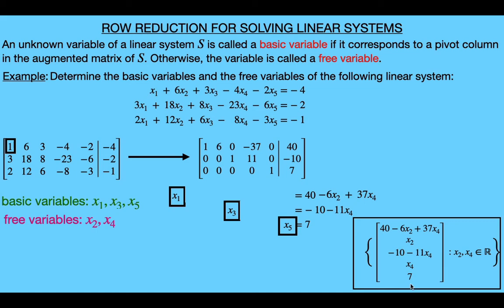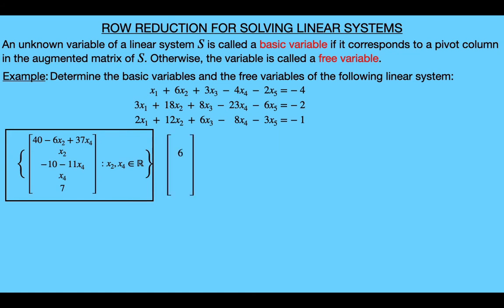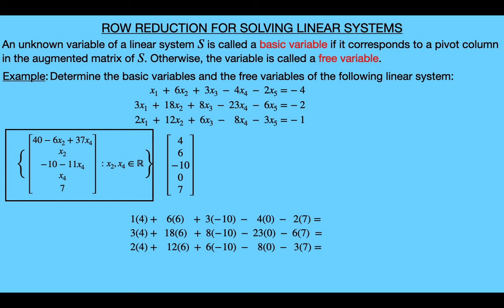And so hopefully here you can see why we call them free variables — because when we describe the solution set like this, we're free to choose any value for these two free variables x sub 2 and x sub 4. For example, suppose that we chose 6 to be the value for the x sub 2 parameter and 0 to be the value for the x sub 4 parameter. Then the values for the other entries will be determined by these two choices. So the first entry will be 40 minus 6 times 6, which is equal to 4; the value for the third entry will be negative 10 minus 0, which is just negative 10; and then the fifth entry is just equal to 7. So this five-tuple is a solution to our linear system, and we can verify this by plugging these values in. If we plug in these values to the left hand side of each equation, we'll get three expressions. When we sum the terms in each expression, the first expression is equal to negative 4, the next one is equal to negative 2, and the last one is equal to negative 1. Since these are the values from the right hand side of our three equations, we have confirmed that this five-tuple makes each equation true, so it is one out of infinitely many solutions to the system.